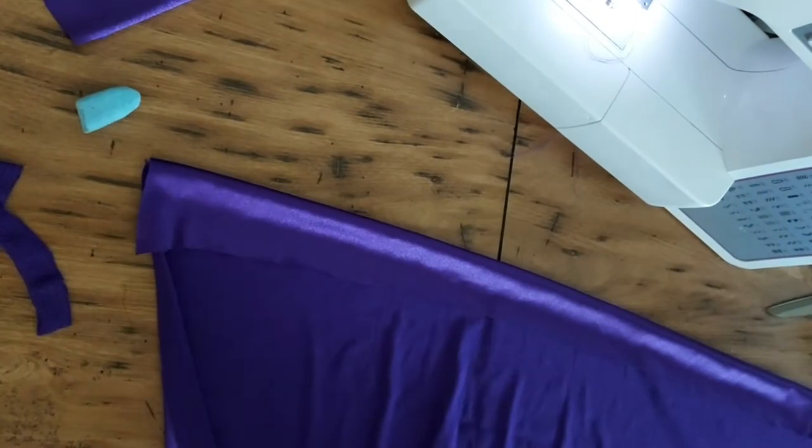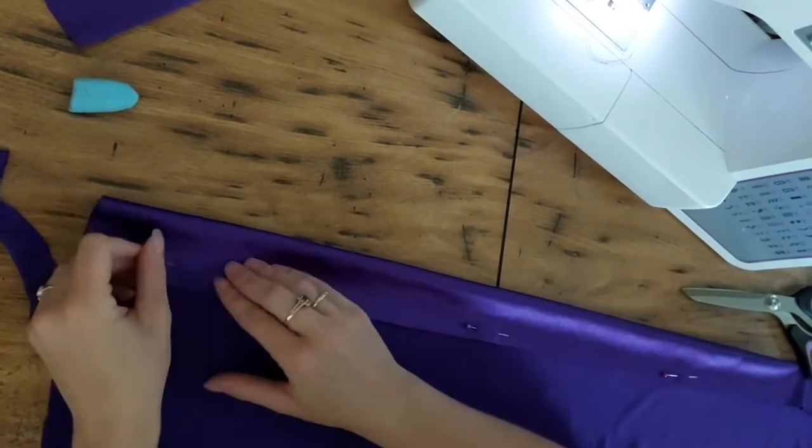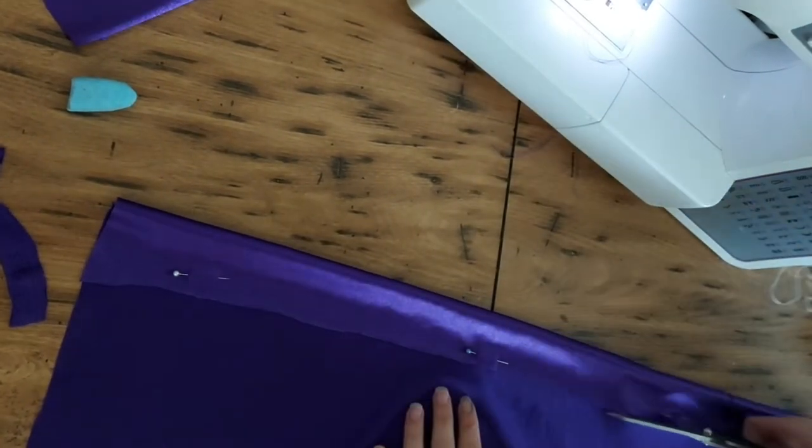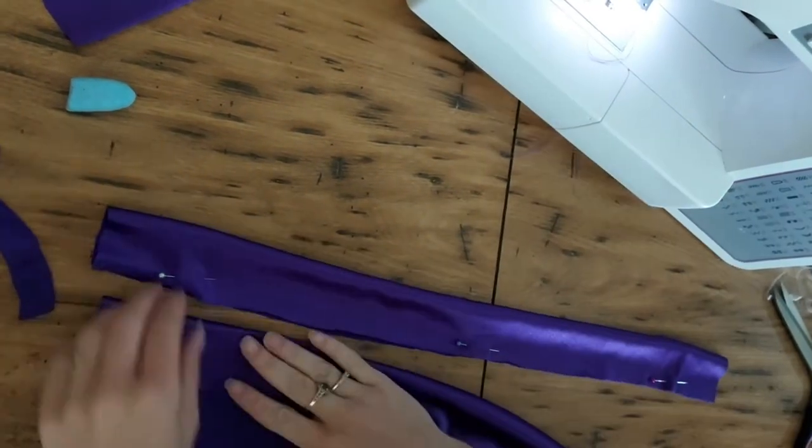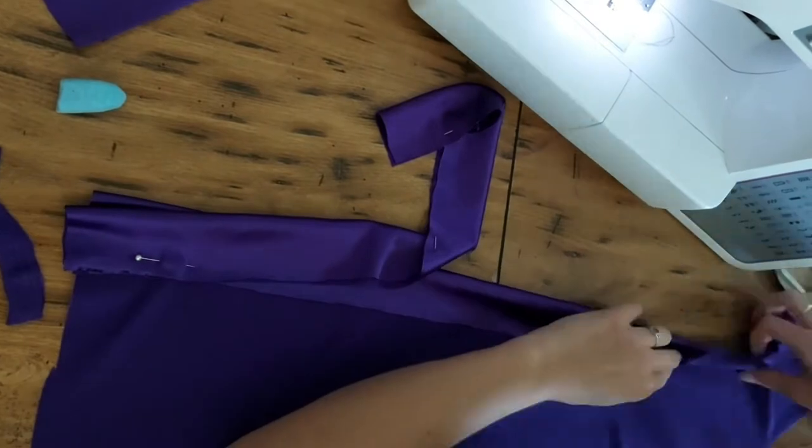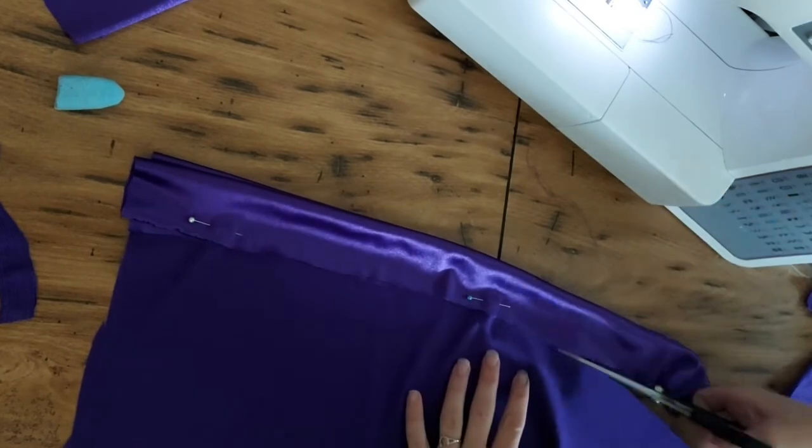I started on the straps by cutting two rectangular pieces of fabric. I actually made the length about the circumference of the child so that I could have the extra space to tie a bow around the back of the neck. I also cut two of these because there will be two straps on the dress.